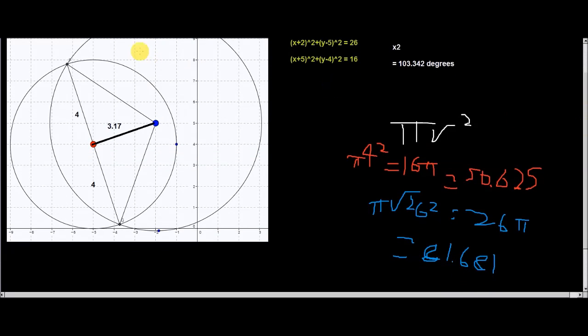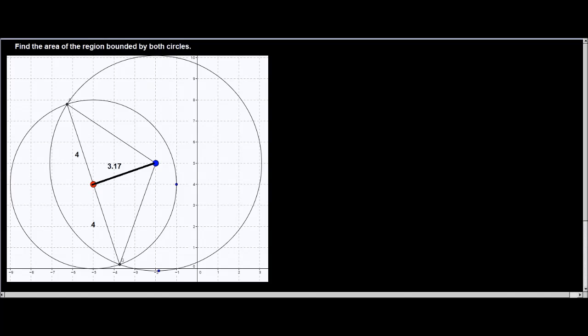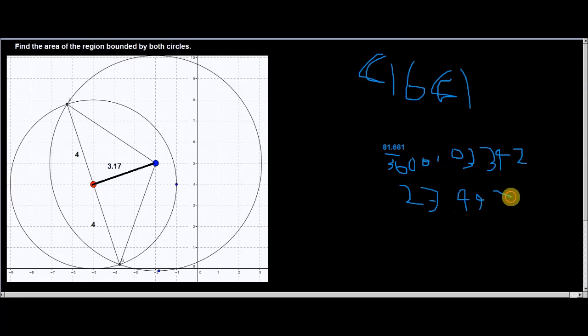The fourth step starts with the previous results. The area of the blue circle is 81.681. I divide it by 360 and multiply it by the central angle, which is 103.342. The result is 23.447. So far I've found the area of this part, which is part of the region bound by both circles, but not all. I'll find what that area is later.